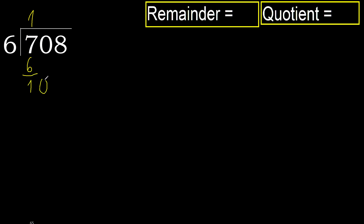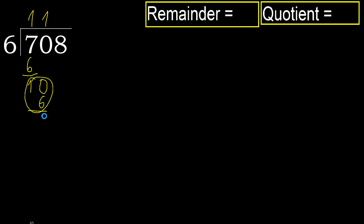Next. Bring down: 10. 6 multiplied by 2 is 12, which is greater. Multiply by 1 gives 6, which is not greater. Okay, subtract.